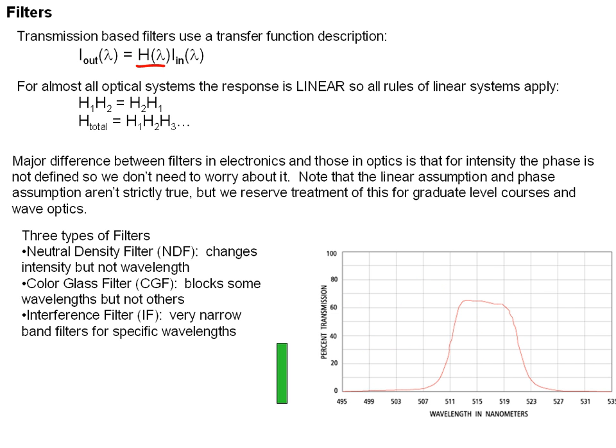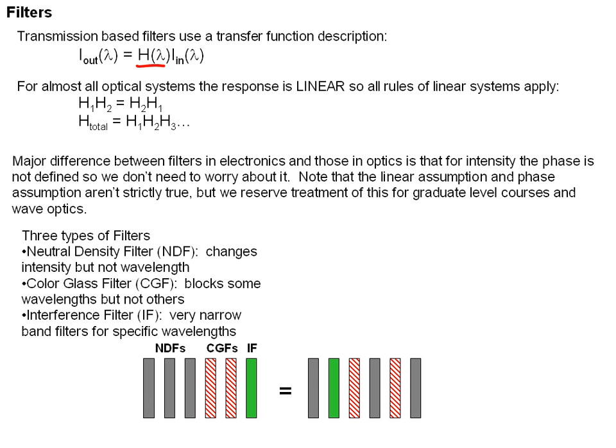Let me stress again about the linear nature of these filters. If I have six filters, three neutral density filters, two colored glass filters, and an interference filter in a particular order, and I shuffle them up, the transmission function or the transfer function of this is going to be exactly the same, no matter what order the filters come in, because they are linear elements.